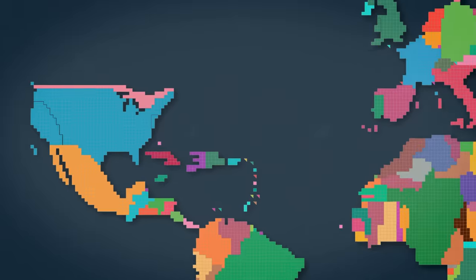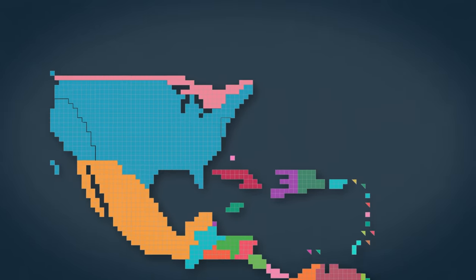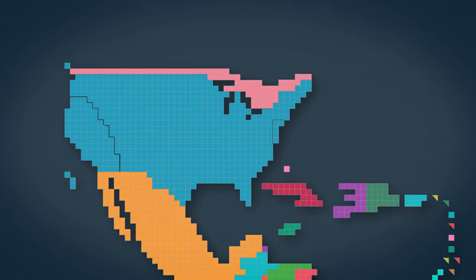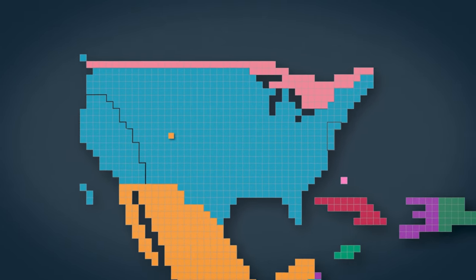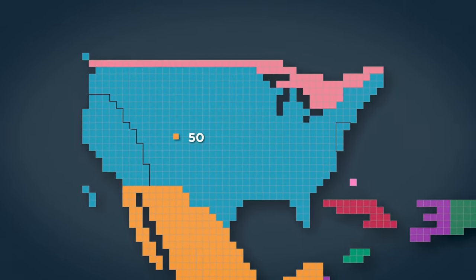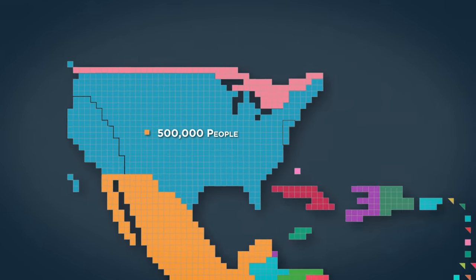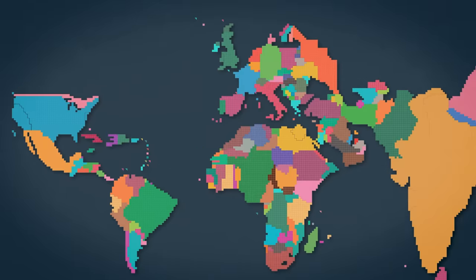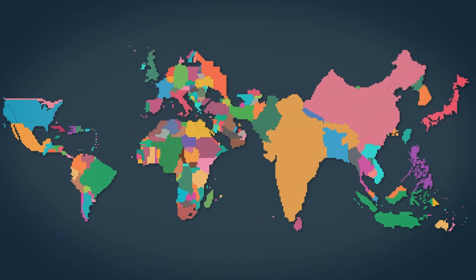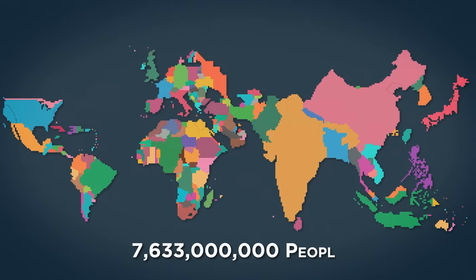Each country's size on the map is directly proportional to its human population. They are all made up of squares, and one square is equal to 500,000 people. The map contains a total of 15,266 squares that truly show where all of the world's 7.633 billion people live across the world, like you've perhaps never seen before.